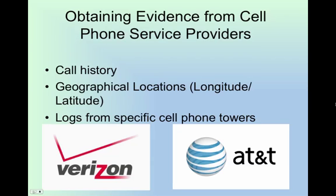Like computer forensic investigations, data and information can be retrieved from the service providers of different cell phone companies. Important information pertaining to the case can be provided to the investigator, such as call history, GPS locations, and specific logs from cell phone towers. Like computer networks, cell phone towers work together and communicate with each other during each call or text. When you are moving in a car, your call is transmitted from each cell phone tower when you move out of each tower's range, and a log of this is recorded at your cell phone service provider.